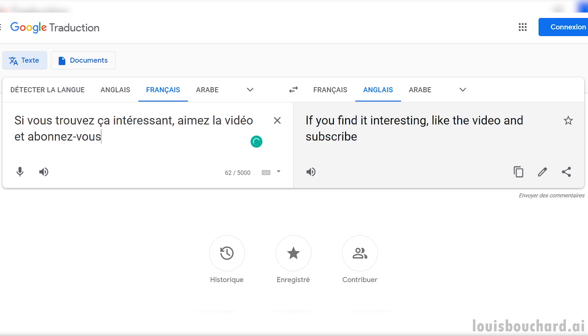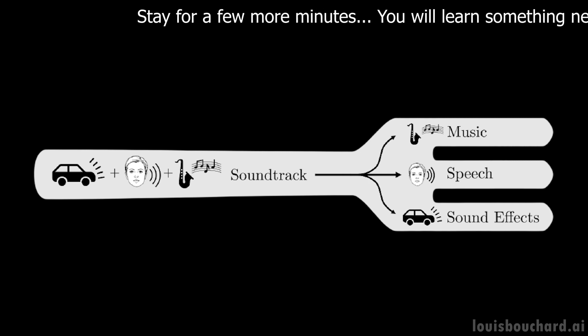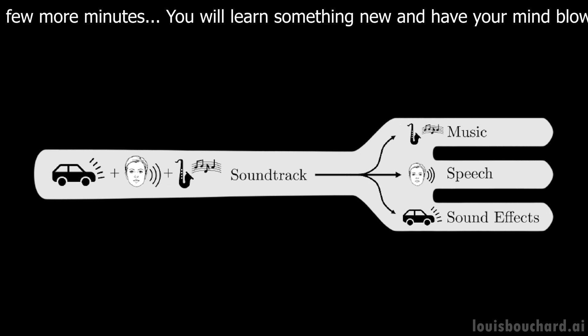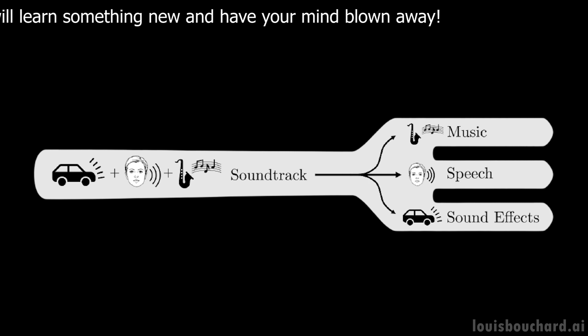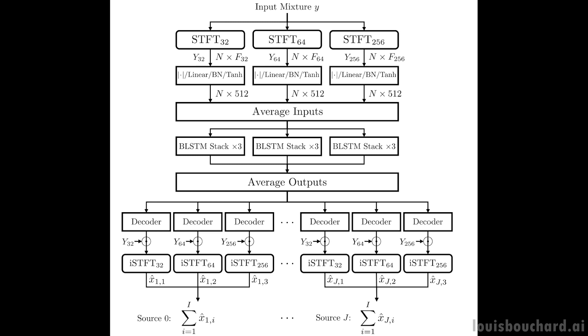This could also be incredibly useful for translations or speech-to-speech applications, where we could isolate the speaker to improve results. The researchers focused on splitting a soundtrack into three categories: music, speech, and sound effects — three categories often seen in movies or TV shows. They called this task the cocktail fork problem. The results are quite amazing, as we will hear in the next few seconds, but first let's look at how the model works.